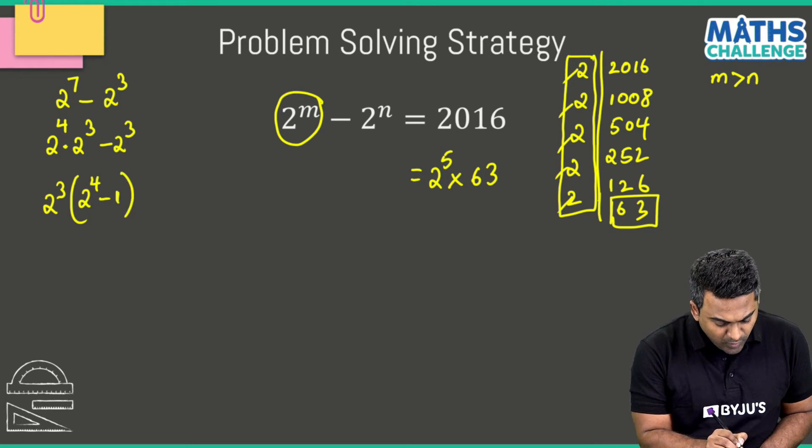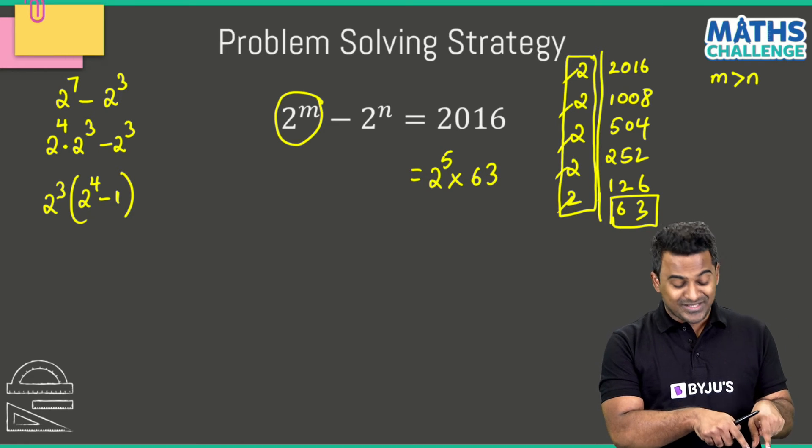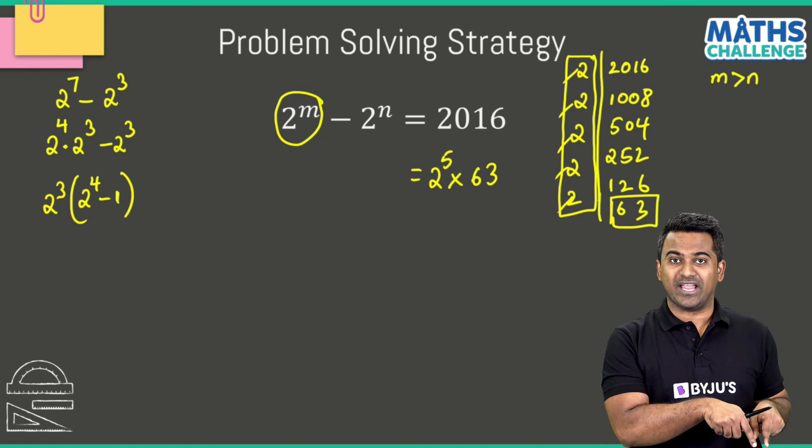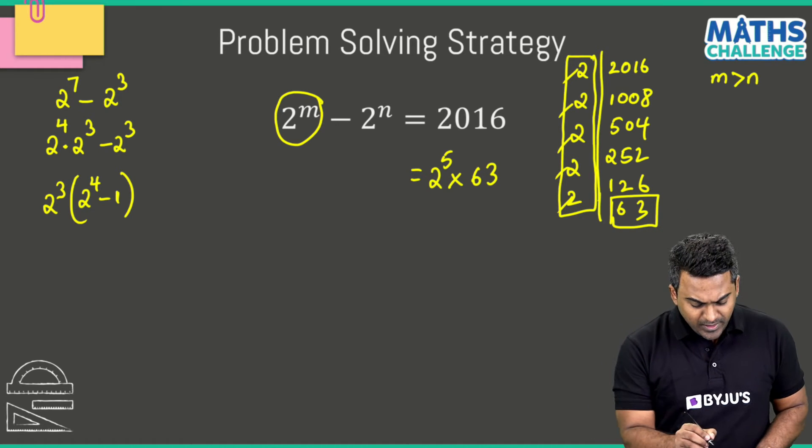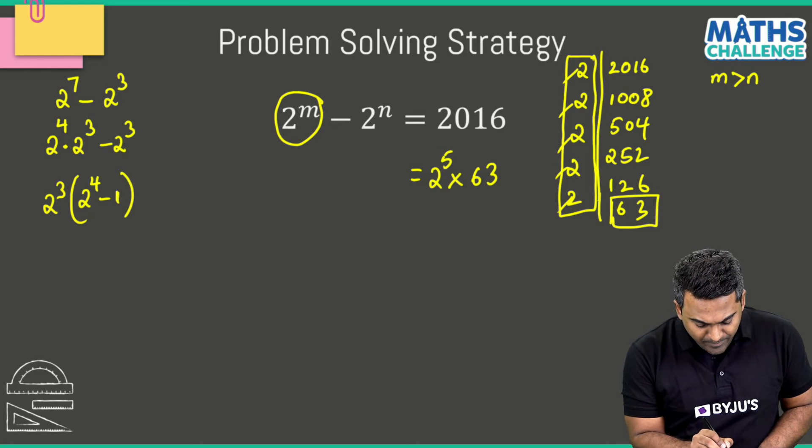And then I can go ahead and take 2 to the power 3 common and write it like 2 power 4 minus 1. So you see, I've converted this subtraction into a multiplication thing. I'm going to repeat the same thing here, right?